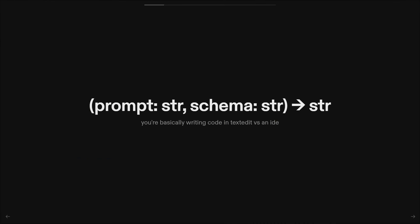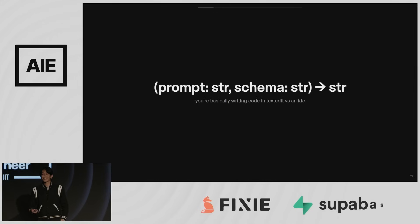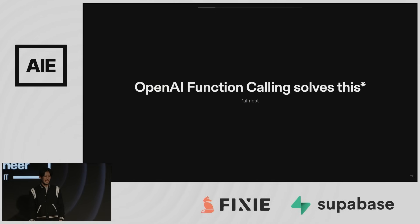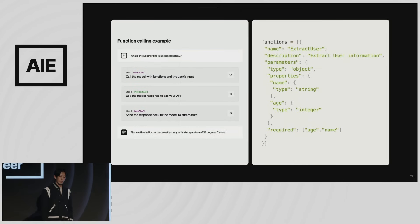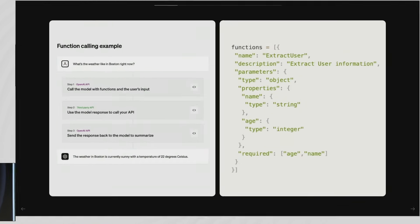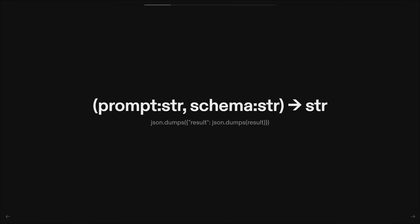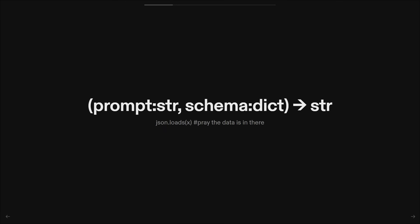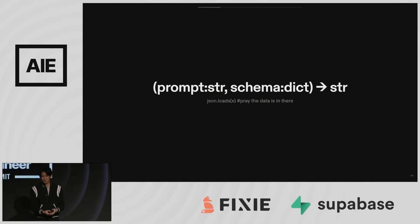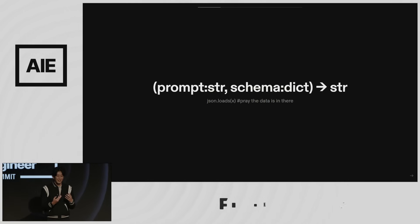Our prompts, schemas, and outputs are all strings. We're kind of writing code in a text editor rather than an IDE where you could get linting, type checking, or syntax highlighting. OpenAI function calls somewhat fixed this — we get to define a JSON schema of the output we want, and OpenAI will do a better job placing the JSON somewhere you can reliably parse. So instead of string to string to string, you get string to dict to string, but you still have to call JSON loads and pray everything is in there.